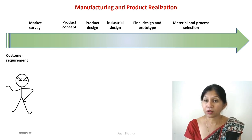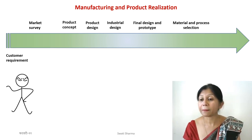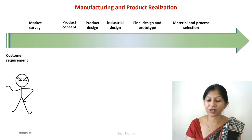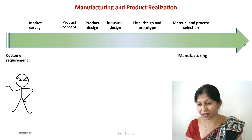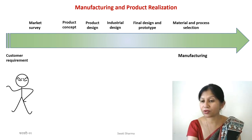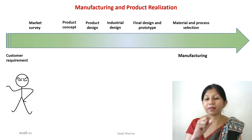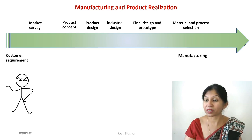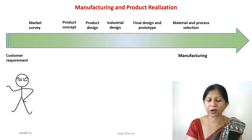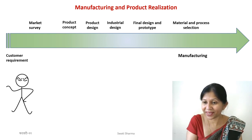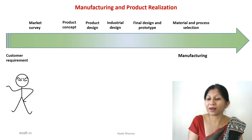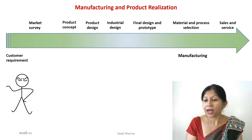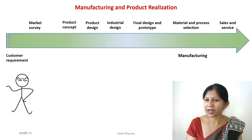Once the design is decided, you move to material selection and manufacturing process selection. Even while deciding which materials and processes to use, you are already in the domain of manufacturing. Then you actually make the product using those selected processes and materials. This is where manufacturing fits into the making — or realization — of a product. Realization simply means making a product real.